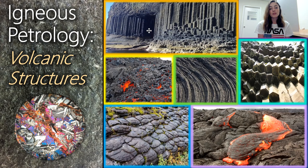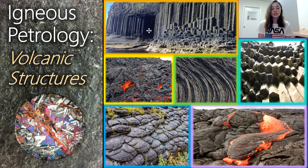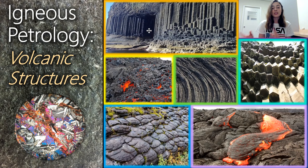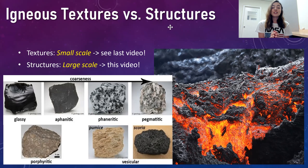We need to talk about both volcanic structures as well as plutonic structures. If you remember from our classifications lecture, we talked about extrusive versus intrusive igneous rocks. Basically, there are rocks that cool extrusively at Earth's surface — volcanic rocks — and there are igneous rocks that cool within the earth — intrusive or plutonic rocks. Those create very different structures, so today we're talking about volcanic structures specifically.